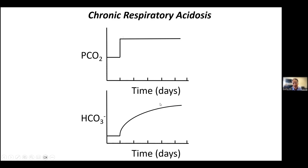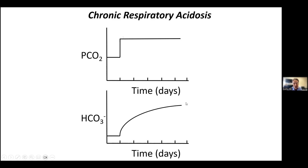Do not use the word 'compensated' for respiratory acid-base disorders — that term didn't evolve and isn't accepted. Use the accepted terminology: acute or chronic. We have a term for the beginning and a term for the final steady state — chronic respiratory acidosis. We don't have a term for anything in between. When you say 'chronic respiratory acidosis,' you're telling someone that the patient's blood follows the chronic rule — the bicarbonate has increased to the predicted value.